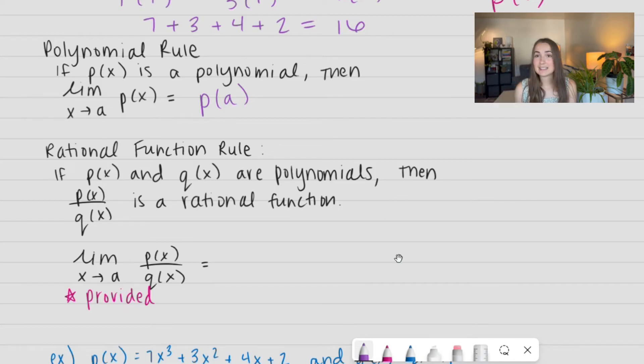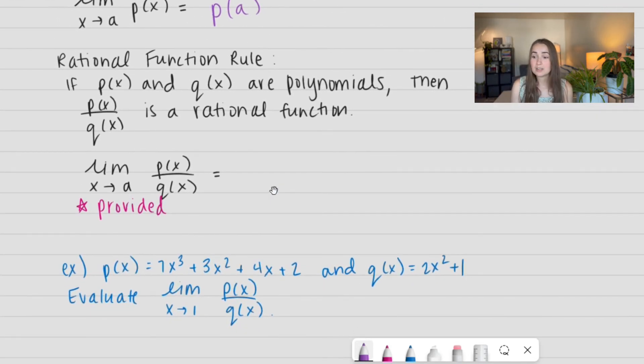So, now we're going to apply this to a rational function. If P of X and Q of X are polynomials, then P of X divided by Q of X is a rational function. So, it just takes two polynomials and divides them together. Just a fancy name for it. So, we're going to go ahead and apply the polynomial rule to this rule.